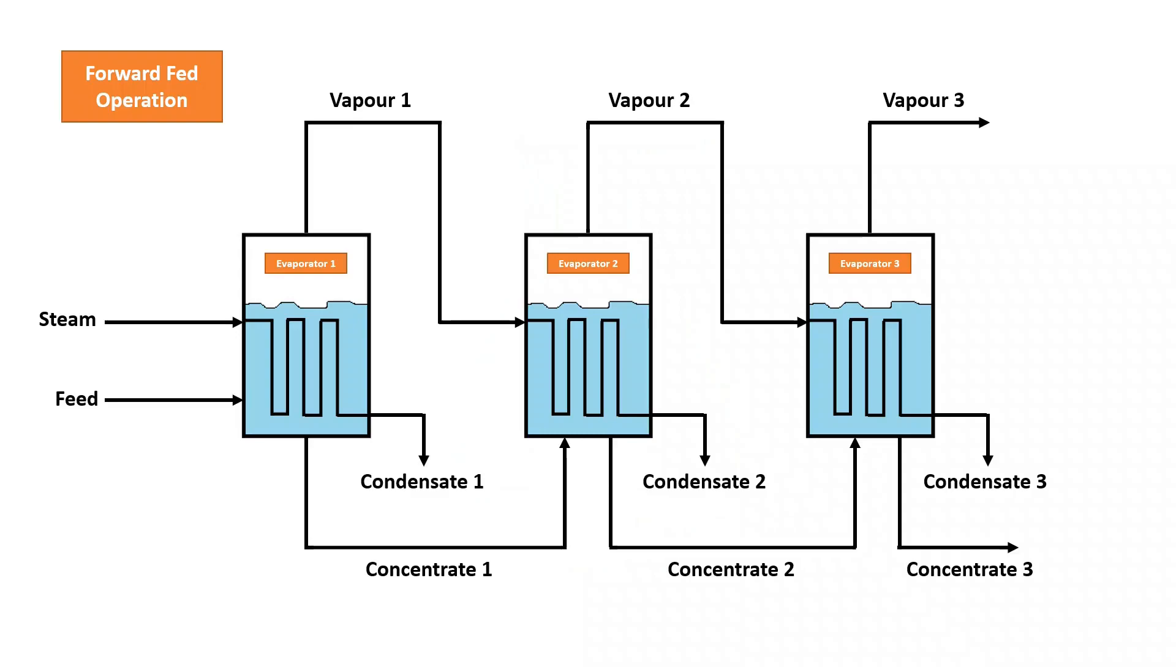In a standard single effect operator, the vapors produced would normally be discarded. However, in a multiple effect operator, the hot vapors from the first effect are passed to the steam chest of the next effect in line, which in this case is evaporator 2.